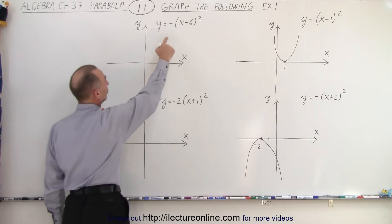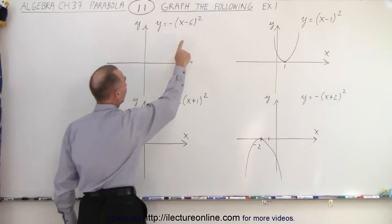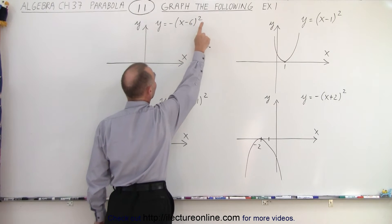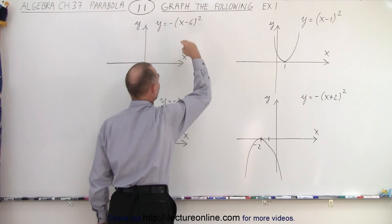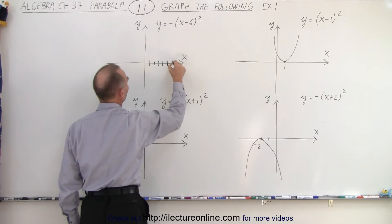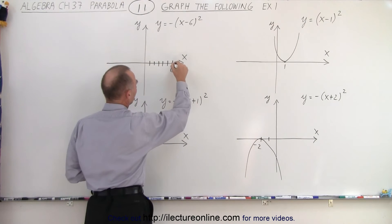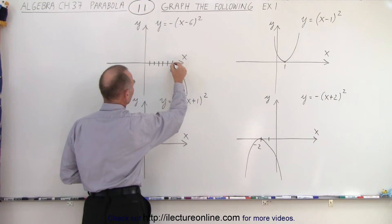Going to our third example, notice we have a negative in front. That means the parabola opens downward. We have a shift to the right of 6, and we don't have a constant, so it's not shifted up or down. So we go 1, 2, 3, 4, 5, 6. The vertex will be right on the x-axis. The parabola will open downward, so it'll look like this.